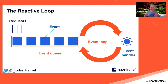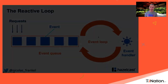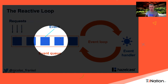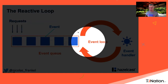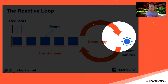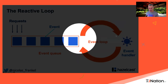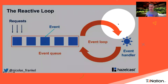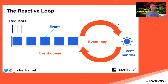The idea behind Reactive Streams is you still have one event loop. Every request goes into a message queue, the event loop processes them one by one and passes them to an event handler. The important thing is the event loop is non-blocking, and event handlers do their own work in their own threads.